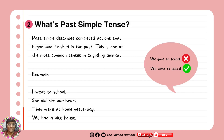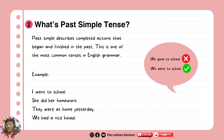The second point is: what is past simple tense? Past simple tense describes completed actions that began and finished in the past. This is one of the most common tenses in grammar. We use it a lot — every time we speak and describe things, we at least use this. So this is really interesting to understand.